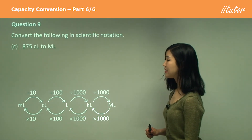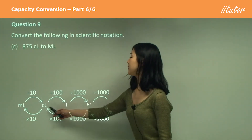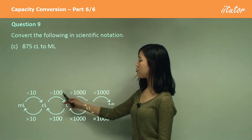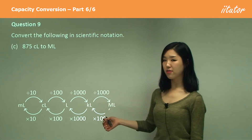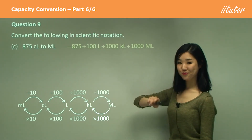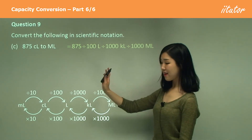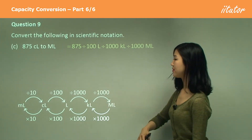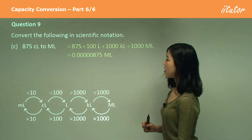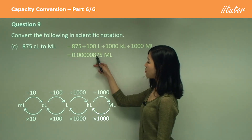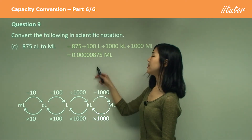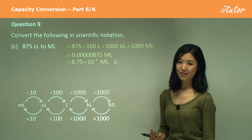Centilitres to megalitres — small to large — we must divide. We divide by a hundred, then a thousand, then a thousand again — so eight decimal places. That gives lots of zeros. We put the decimal there and go back six places, so it's 10 to the power of negative 6.